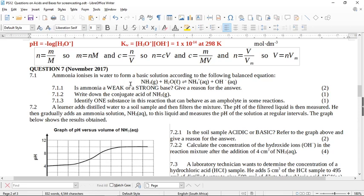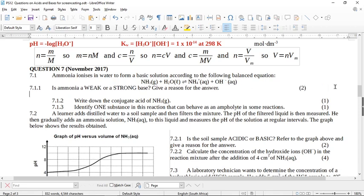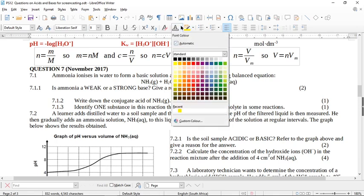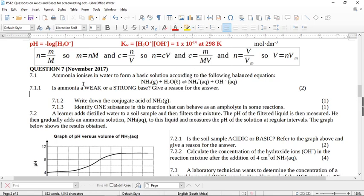So ammonia ionizes in water to perform a basic solution according to the following balanced equation. Ammonia gas plus water goes to the ammonium ion and the hydroxide ion. Is ammonia a weak or a strong base? Give a reason for your answer. So ammonia is a weak base because it does not completely dissociate.